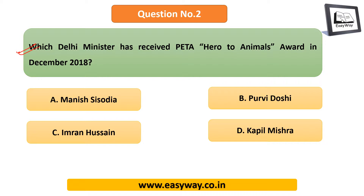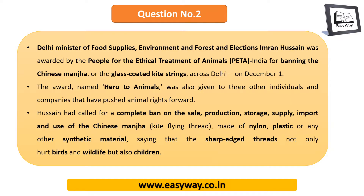The second question: which Delhi minister received the PETA Hero to Animals Award in December 2018? The answer is Imran Hussain. Delhi's minister of food supplies, environment and forest, Mr. Imran Hussain, was awarded by PETA — People for the Ethical Treatment of Animals — because he took the lead in bringing about a ban on Chinese manja, or glass-coated kite strings, across Delhi. Chinese manja is very dangerous not only to humans but also to wildlife and children. Mr. Imran Hussain led the campaign that resulted in the ban, and that is why PETA awarded him the Hero to Animals award.